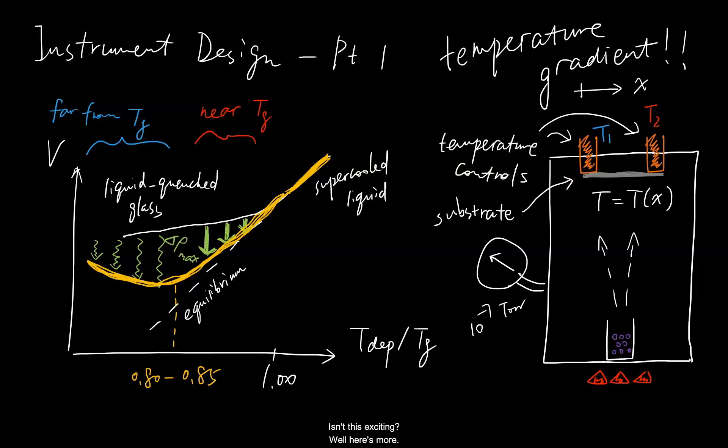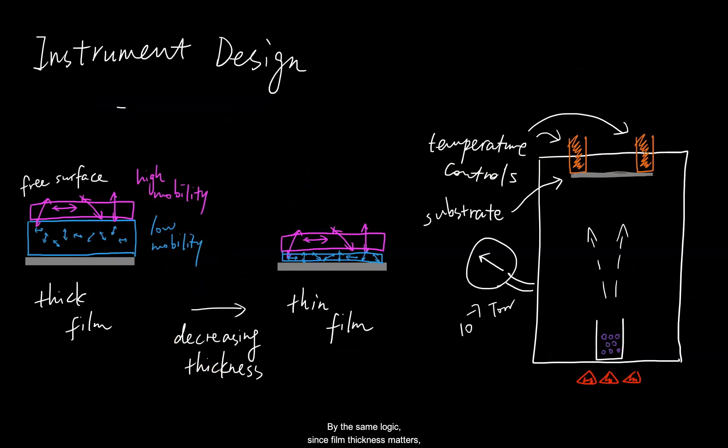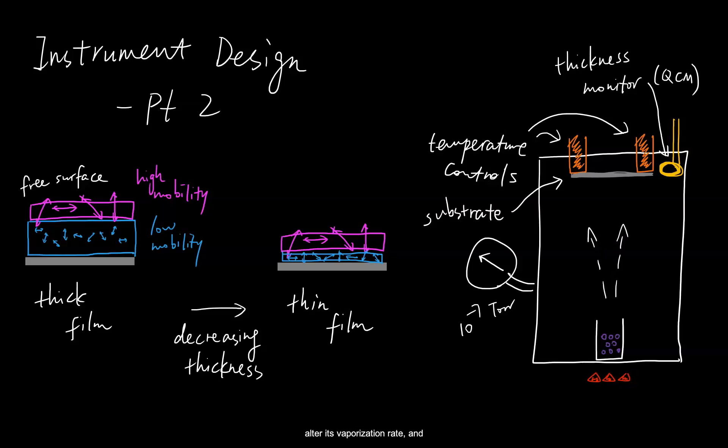Well here's more. By the same logic, since film thickness matters, we had to further modify the vacuum system to be able to monitor the thickness of the glass film being deposited. This was an easy fix since thickness monitoring devices are widely popular. The change of thickness with time is also known to play a role in the stability of PVD glasses. We were able to fine-tune the heating power applied on the glass-forming material to alter its vaporization rate, and therefore the deposition rate.